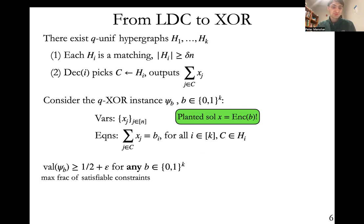In particular, the value of the instance, which is the maximum fraction of satisfiable constraints, must be at least half plus epsilon, regardless of the initial message b that was chosen. It could be larger, but we know it at least has some non-trivial value above a half. Now if we could show that for some choice of b, the value actually had to be smaller than half plus epsilon, we would have our desired lower bound, because we would have shown that this code, the decoder, cannot function. It cannot succeed with probability half plus epsilon for any message b.